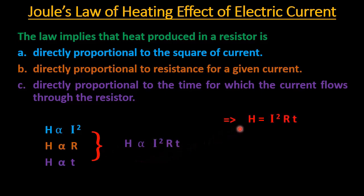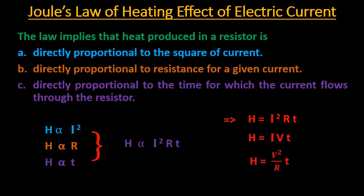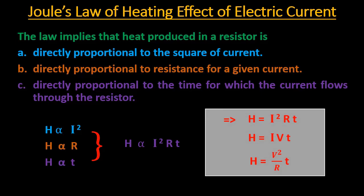Combining all three proportionalities, heat H = I²Rt. Using Ohm's law, the formula for heat can also be written as H = I × V × t, and also as H = V²/R × t.